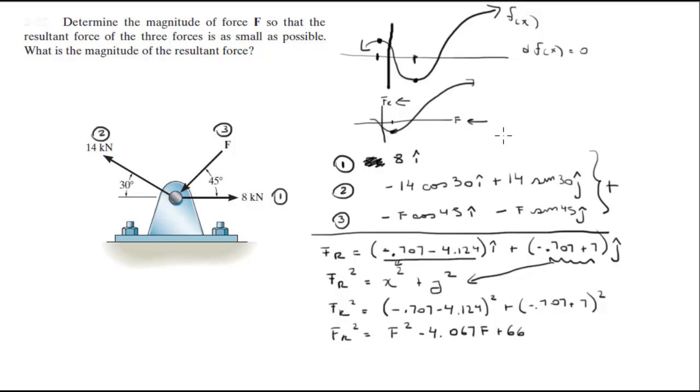Now as I told you before, as you can see we have F_R as a function of f. So what you're going to do is take the derivative of the function with respect to f, and you're going to get that the derivative is equal to 2f minus 4.067, and remember you've got to set it equal to 0 to find the local maxima and minima.